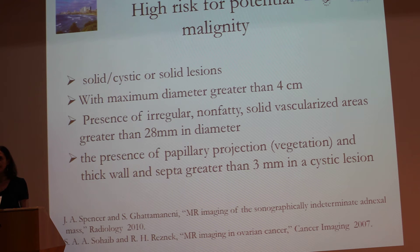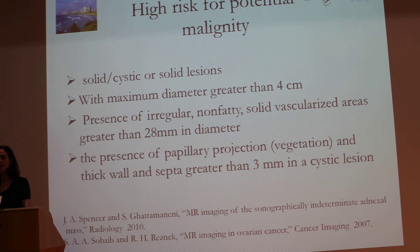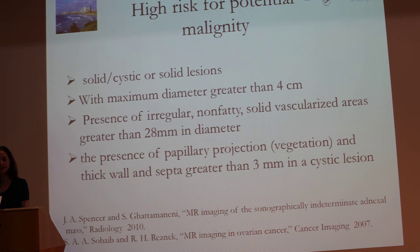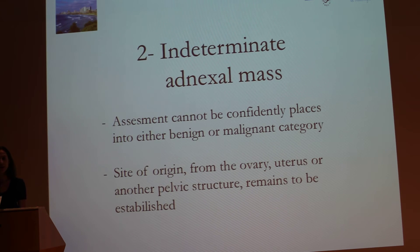Regarding potential malignancy, when you are in front of complex masses — solid-cystic masses with a diameter greater than 4 cm — size is important. When the size is quite big, it helps suggest malignancy. Also relevant is the presence of irregular non-fatty solid vascular areas greater than 3 mm, solid elements, papillary projections, and thick walls and septa greater than 3 mm in cystic lesions.